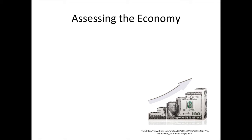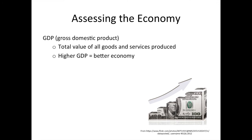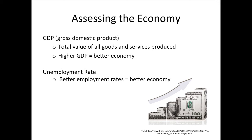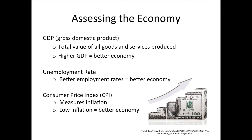So how do we know if the economy is doing well or not? We assess the economy in a variety of ways. Some of the more popular methods include looking at GDP, or Gross Domestic Product, which tells us the value of all goods and services produced. The higher the GDP, the more value that's being created, and in general, the better the economy is doing. We can also look at the unemployment rate. The lower the unemployment rate, the more people that are working and making money and contributing value to the economy. And finally, we can look at inflation. This is usually done by looking at the Consumer Price Index, which can tell us how much our dollar is worth. A stable and predictable dollar value is best for the economy in general.